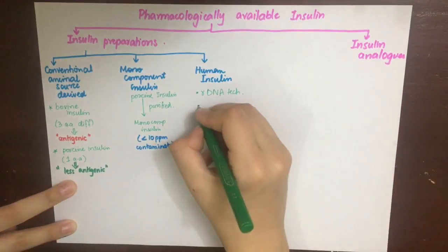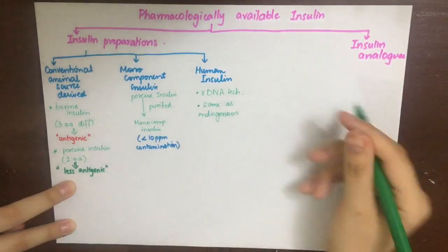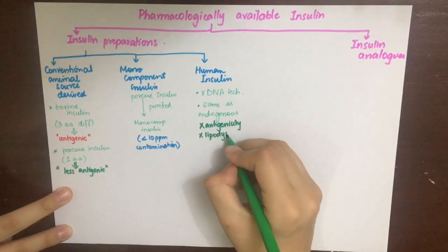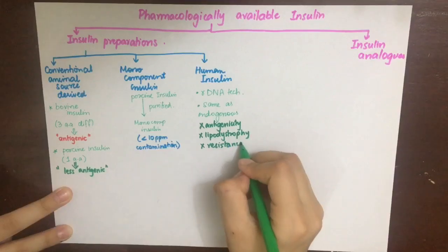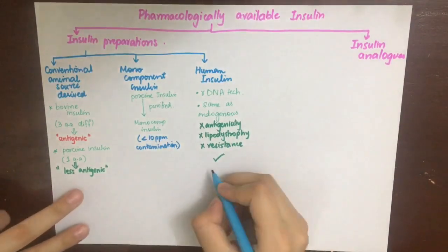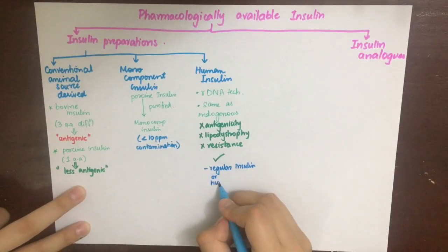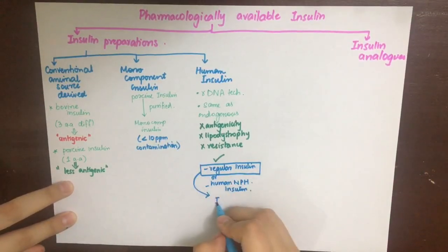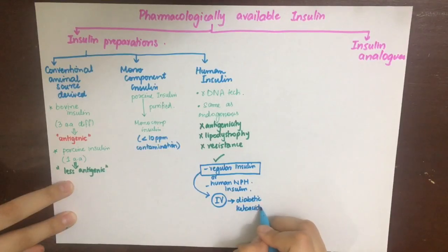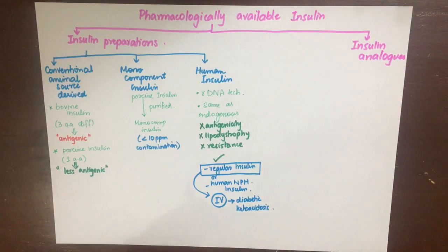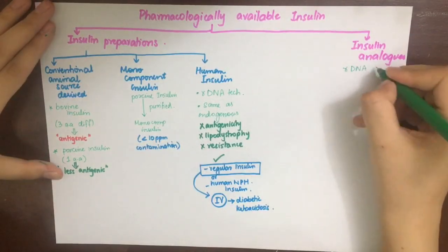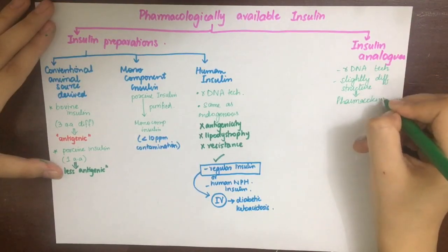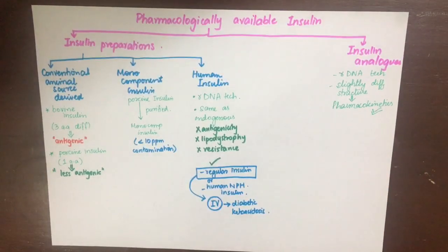Human insulin is derived from recombinant DNA technology using E. coli or yeast. It has the same amino acid sequence as human insulin, so it does not cause antigenicity or immune response, does not cause lipodystrophy at the subcutaneous injection site, and there is no insulin resistance. Examples are regular insulin and human NPH insulin. Regular insulin can be given IV in emergencies such as diabetic ketoacidosis. Insulin analogues are also created by recombinant DNA technology but have a slightly different amino acid sequence, giving them different pharmacokinetic properties and longer action.